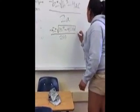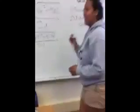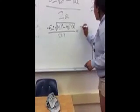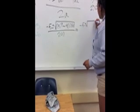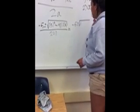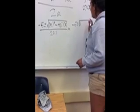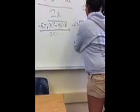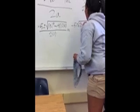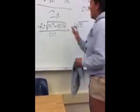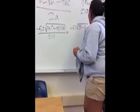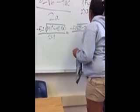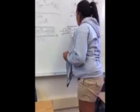And then we simplify it. So, it'll be negative 5 plus minus the square root of 1 all over 2. Oh, okay. I'm sorry. 25 minus... She's just so smart. 25 minus 24.